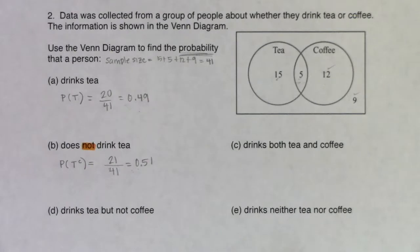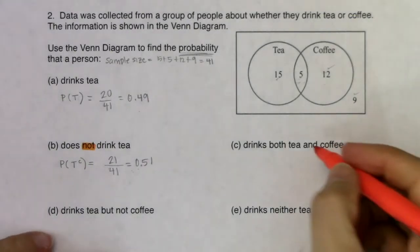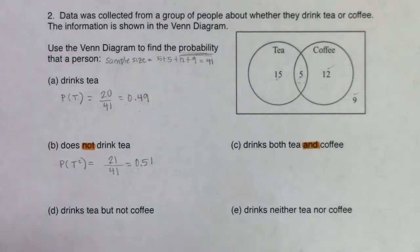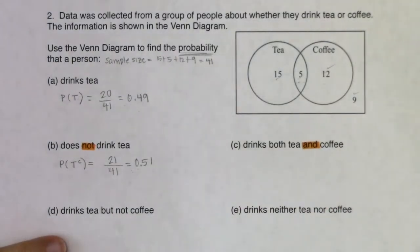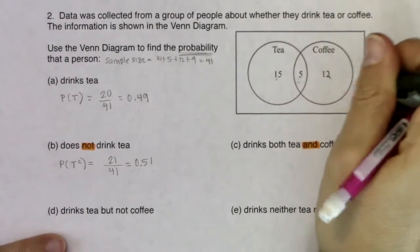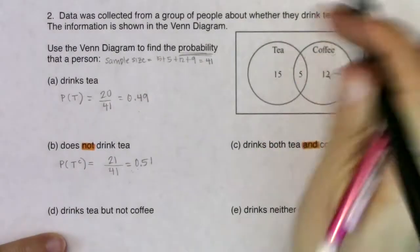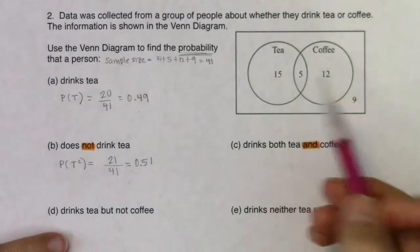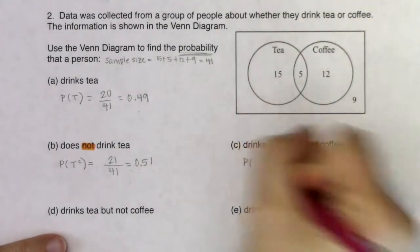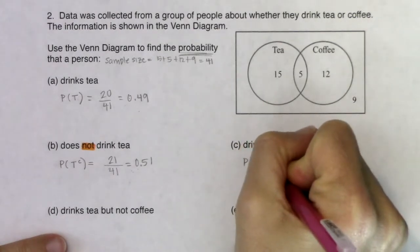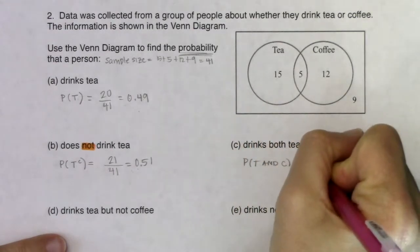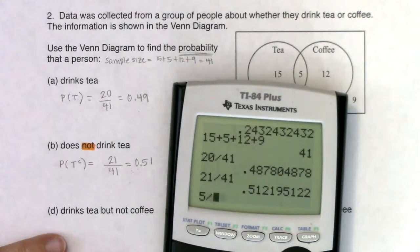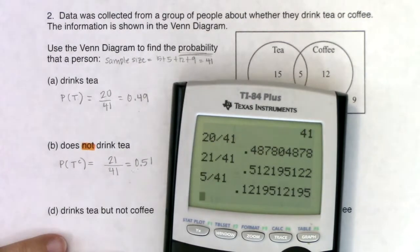For part C, the question asks for drinks both tea and coffee. The 'and' on a Venn diagram lives in the football — the intersection. So the probability of tea AND coffee is 5 out of 41, which works out to about 12%.